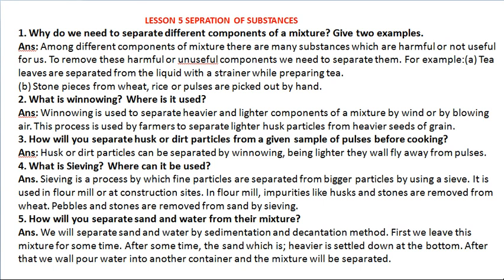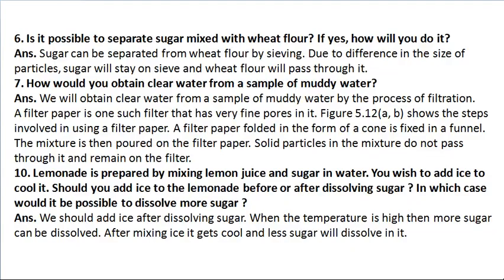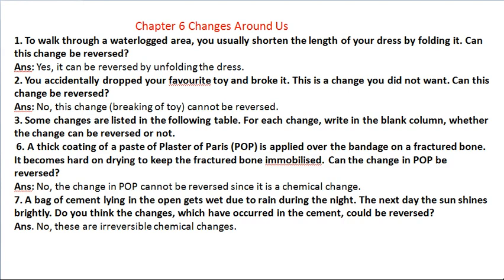For Lesson 5, topics covered include: what is winnowing and where it is used; how will you separate husk or dirt particles from a given sample of pulses before cooking; what is sieving (chaanna) and why we do it; and how would you obtain clear water from a sample of muddy water — decantation aur sedimentation bahut achhe se explain kiya gaya hai. Aap jaakar usko click karein, dekhen, and you will get the answers and understand also.